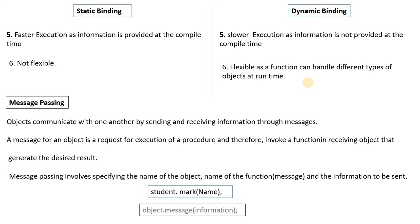Next is message passing. Objects communicate with one another by sending and receiving information through messages. A message for an object is a request for execution of a procedure, and therefore invokes a function in the receiving object that generates the desired result.